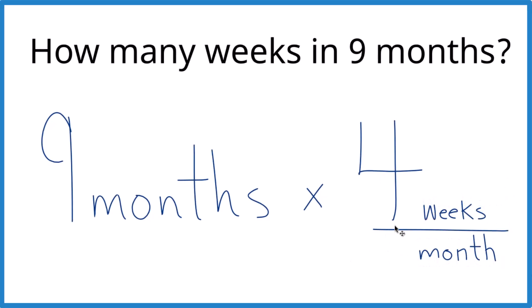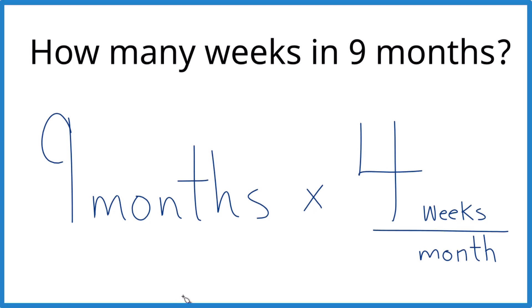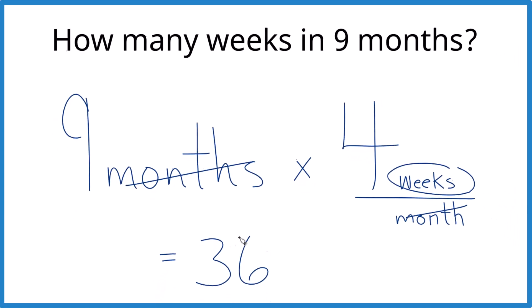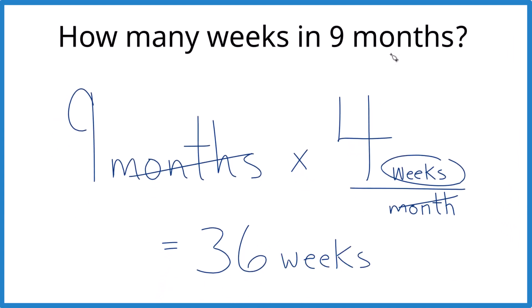Nine times four gives us 36. Months cancel out, we're left with weeks. That's what we're looking for. So 36 weeks in nine months.